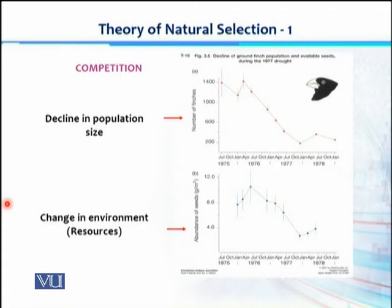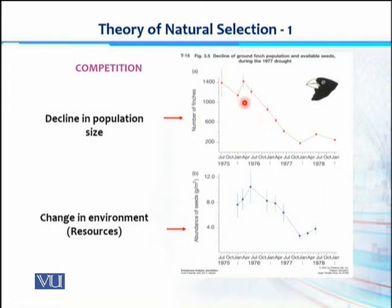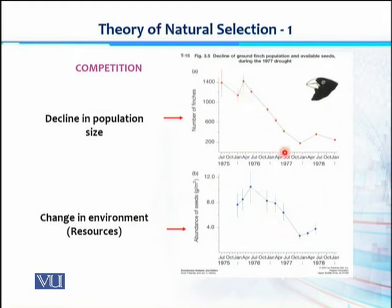To understand this process of competition, we can study the Galapagos finches. The number of finches was higher and increasing over time. But when resources and climatic conditions became unfavourable — there was a drought in the Galapagos Islands in 1977 — food and water resources dropped. There was a direct association between climatic factors and population size. When food availability was not supporting population increase, the population size decreased.